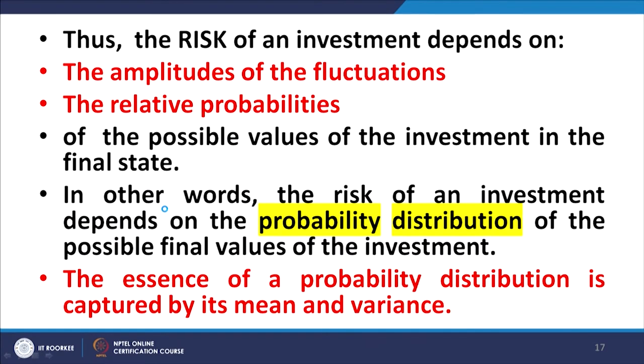Both the properties — the amplitudes as well as the probabilities of the occurrence of those deviations — are captured by the probability distribution of the values of the asset in its final states. It is basically the probability distribution of the values of the asset on the future date that would determine the riskiness of the asset. There are certain probability distributions which are entirely captured by the expected value and the variance, for example the Gaussian distribution. The expected value and variance give us significant information, capturing the first and second moments of the distribution.